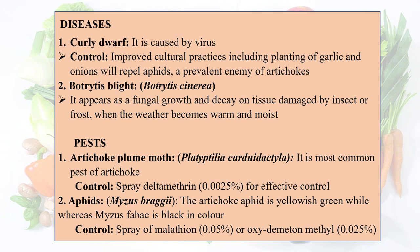Regarding diseases: curly drop is caused by a virus; its control includes improved cultural practices such as planting garlic and onion to repel aphids. Botrytis blight is caused by Botrytis cinerea and appears as fungal growth and decay on tissue damaged by insects or frost when the weather becomes warm and moist.